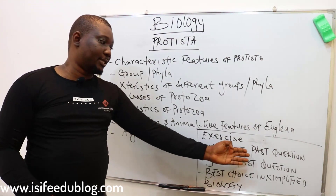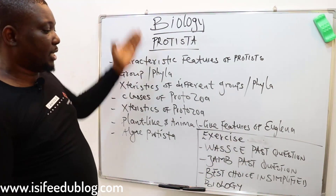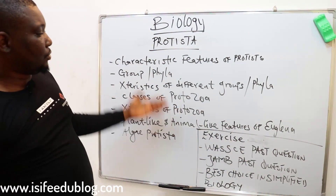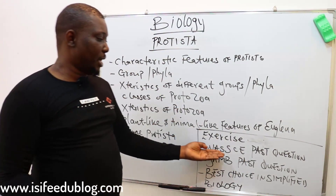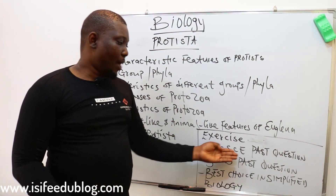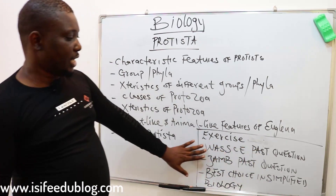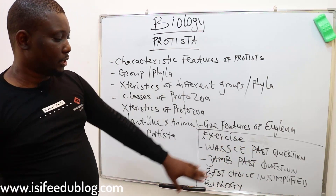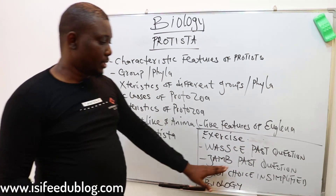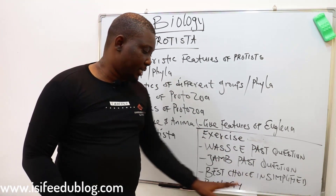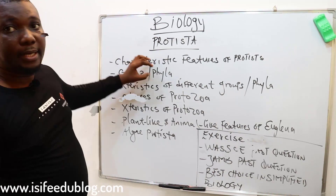I want you to go to the exercises after the objectives. I'd like you to go to the past questions — WAEC past questions, JAMB past questions, and the best choice in Simplified Biology by Anko P.